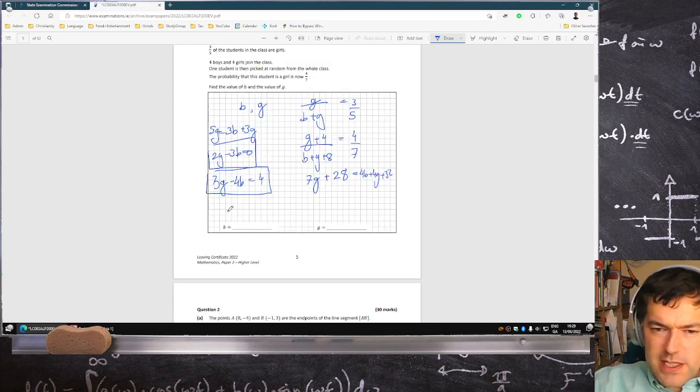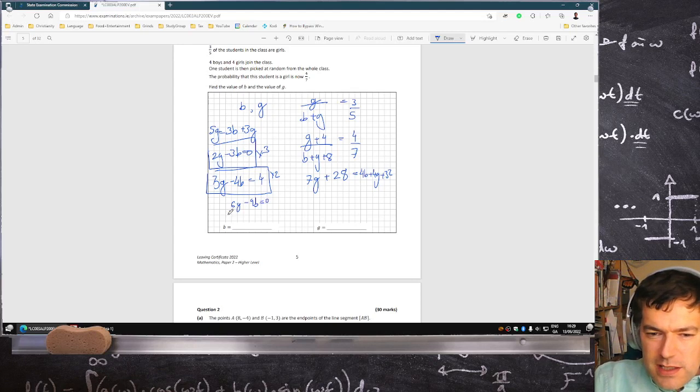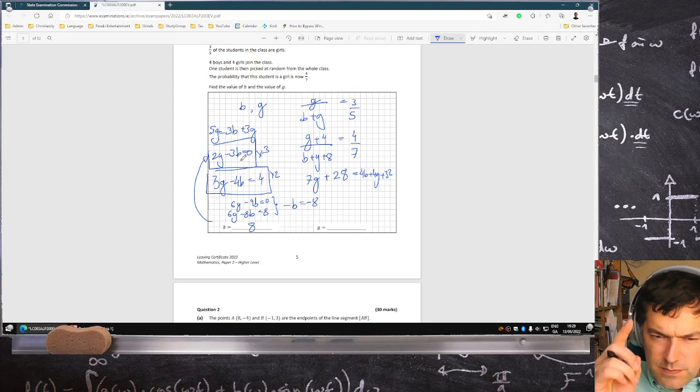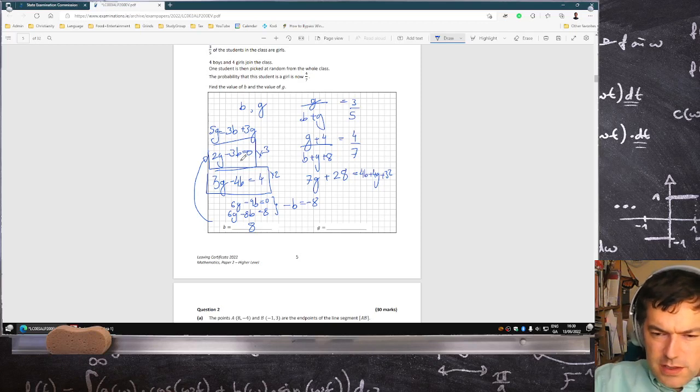I left myself not much space. Multiplied this by three and this by two, so now I have 6g minus 9b equals zero and 6g minus 8b equals eight. If I subtract these, they cancel. Minus nine minus minus eight is minus b equals minus eight, so b is eight. And if I sub eight back into there, g is 3b over two. Three times eight is 24 divided by two is 12, so g is 12.